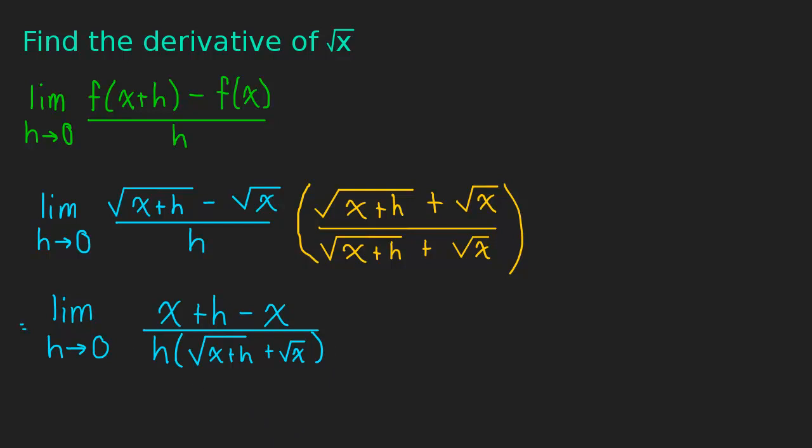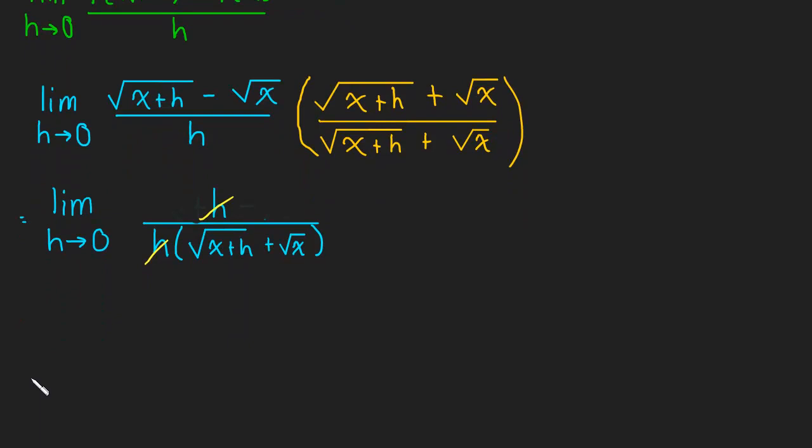Divided by h times the square root of x plus h plus the square root of x. Okay, well, a couple of things happen that are really nice right in this step. We have an x and a minus x, so those go away. They cancel. And then we have this h in the numerator and an h in the denominator. Well, those can divide out. And let's just see what we're left with here.